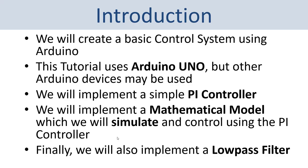For a short introduction: we will create a basic control system using Arduino. In this tutorial we will use the Arduino Uno device, which is the most common Arduino device, but of course other Arduino devices may also be used. We will implement a simple PI controller and a mathematical model which we will simulate and control using the PI controller — implementing the PI controller from scratch using Arduino software — and finally we will also implement a low pass filter from scratch using Arduino software.